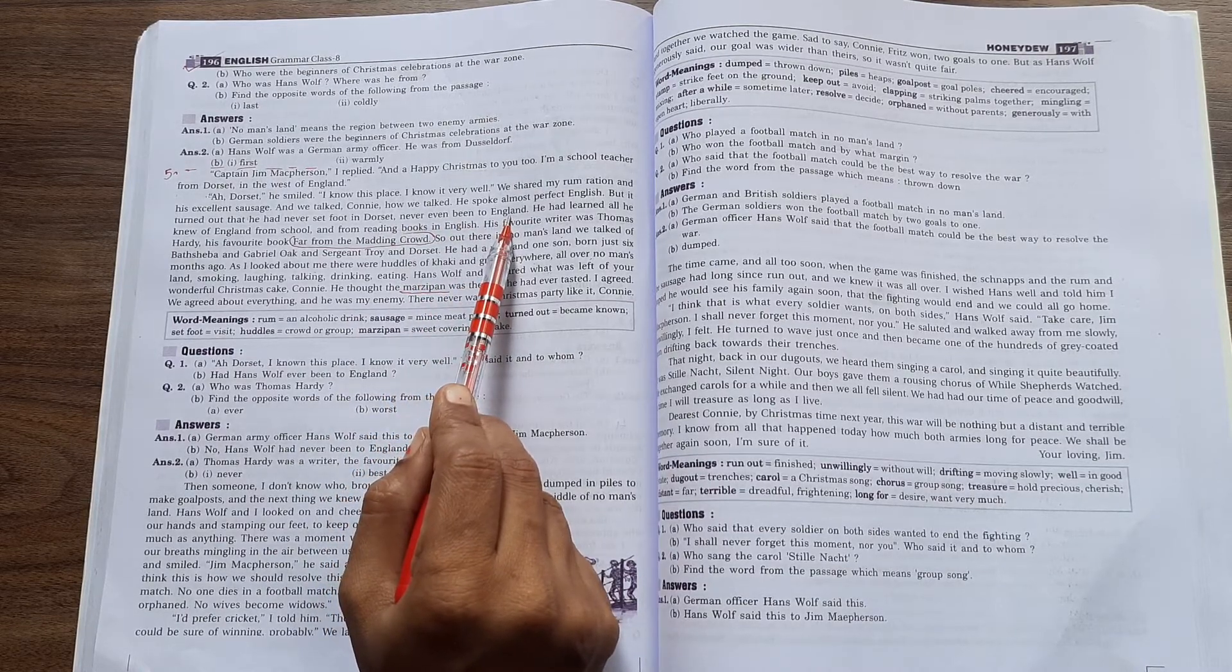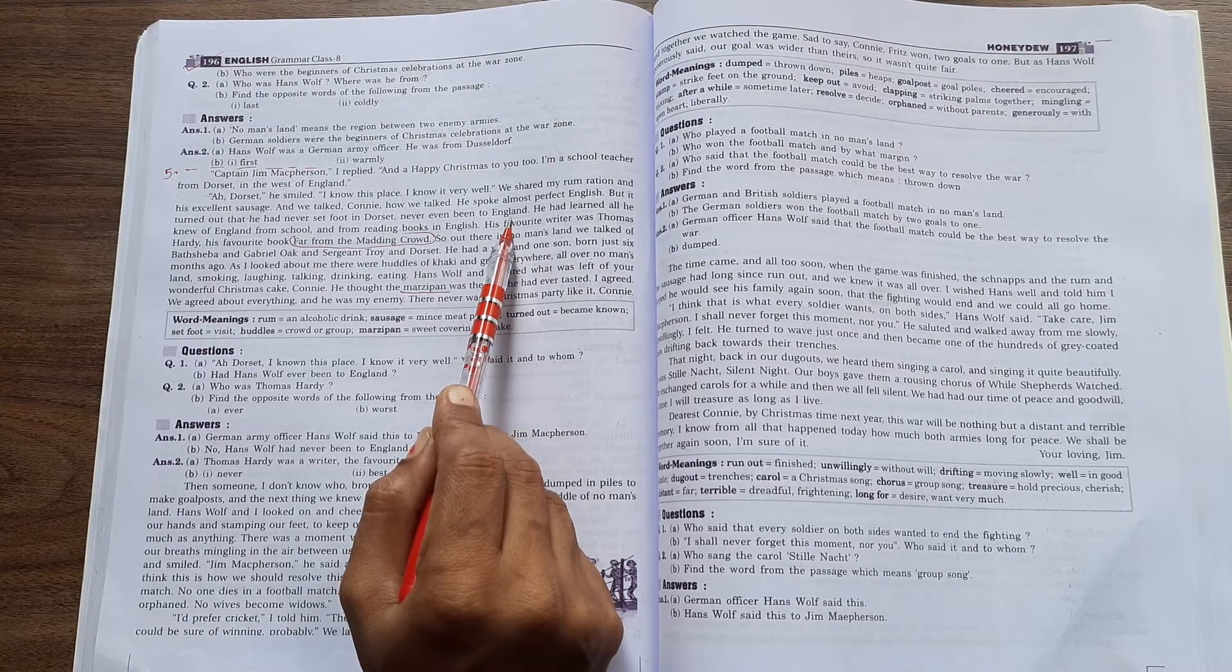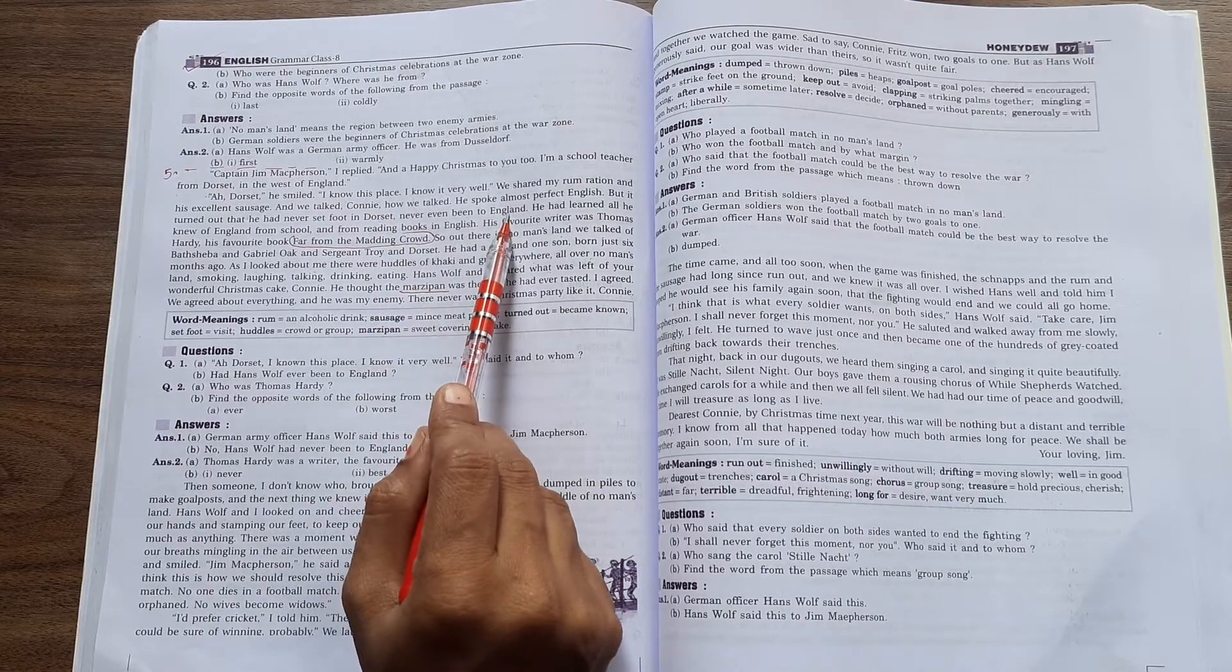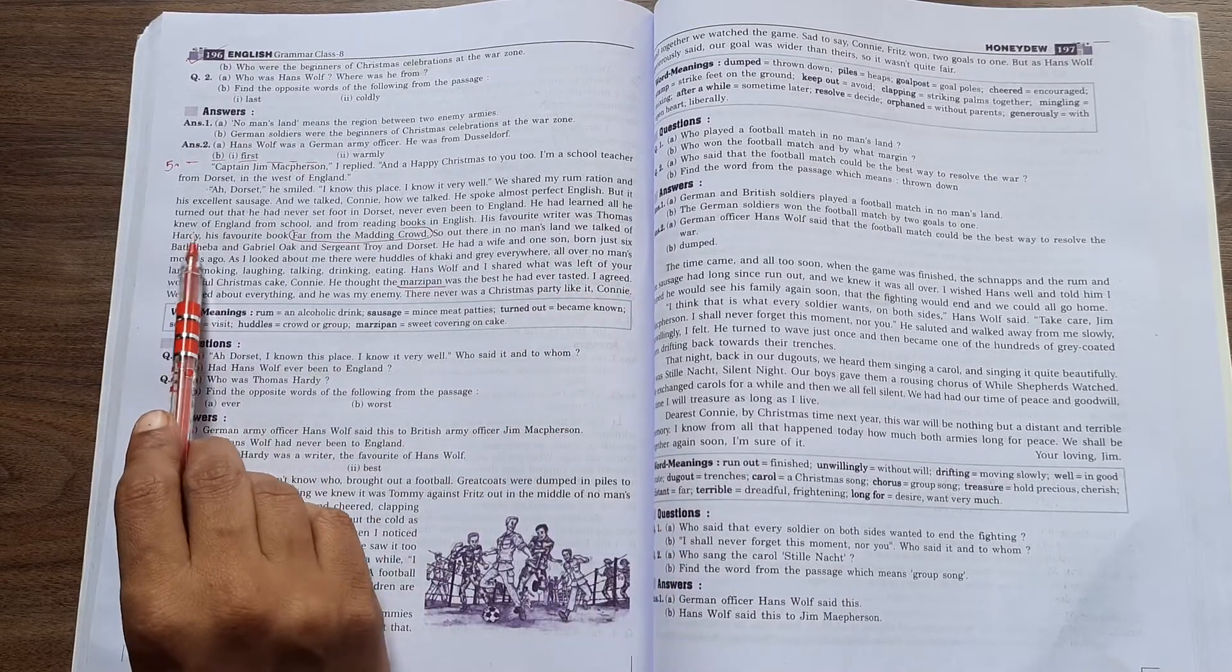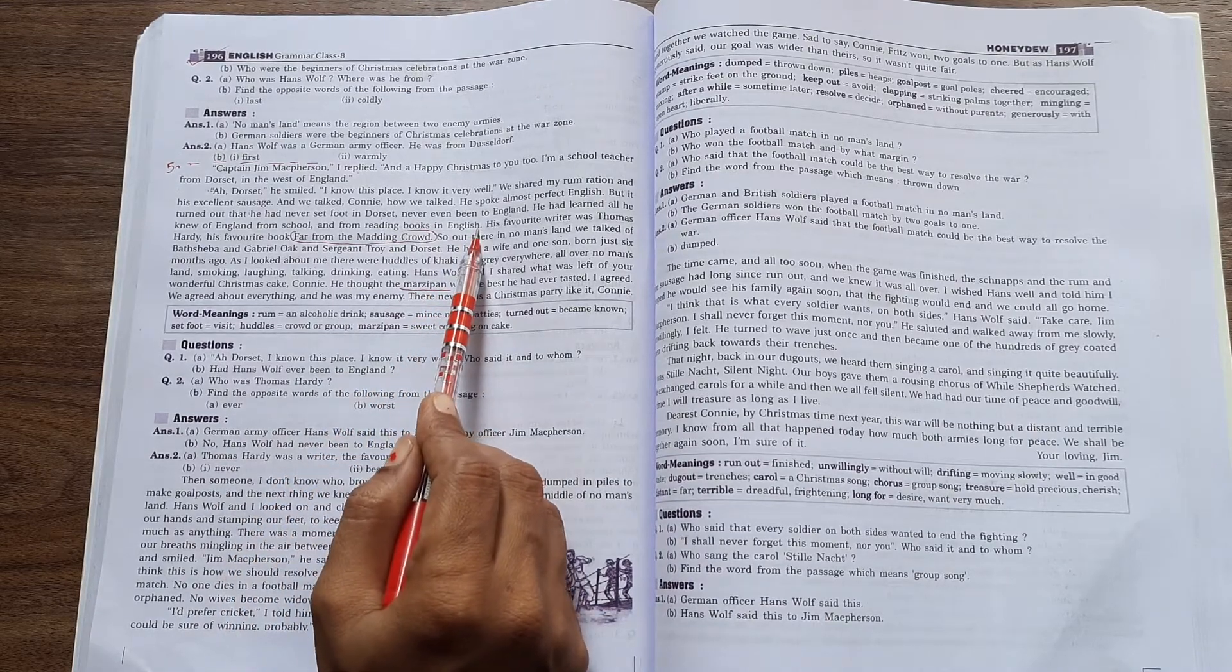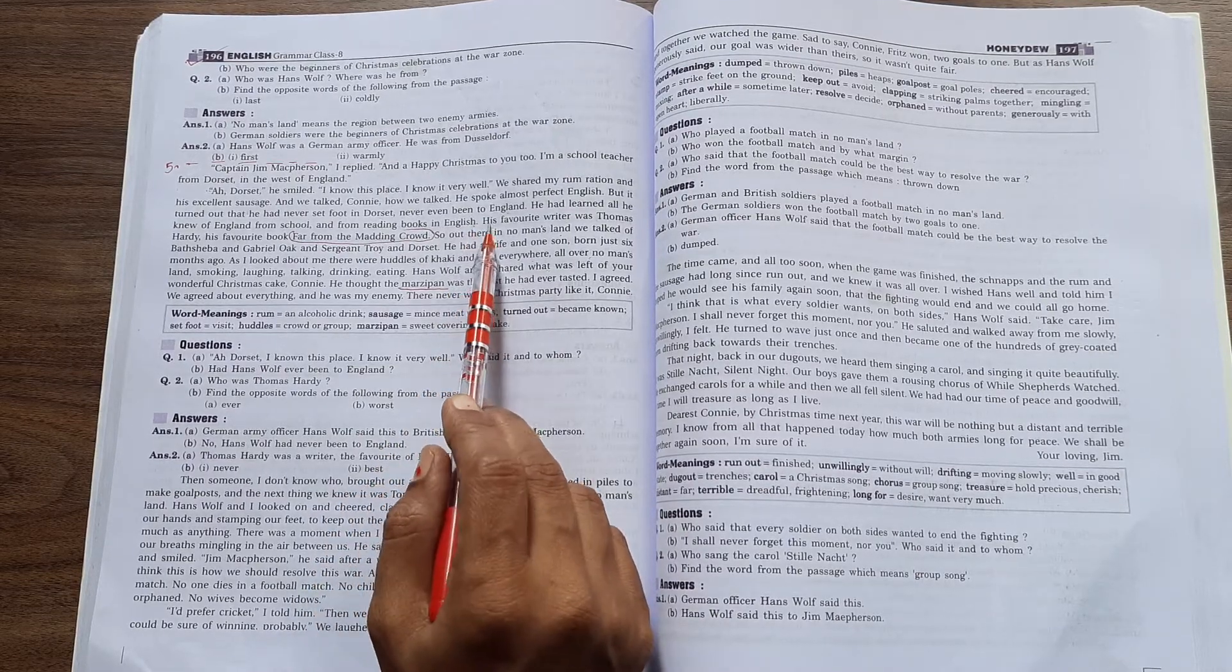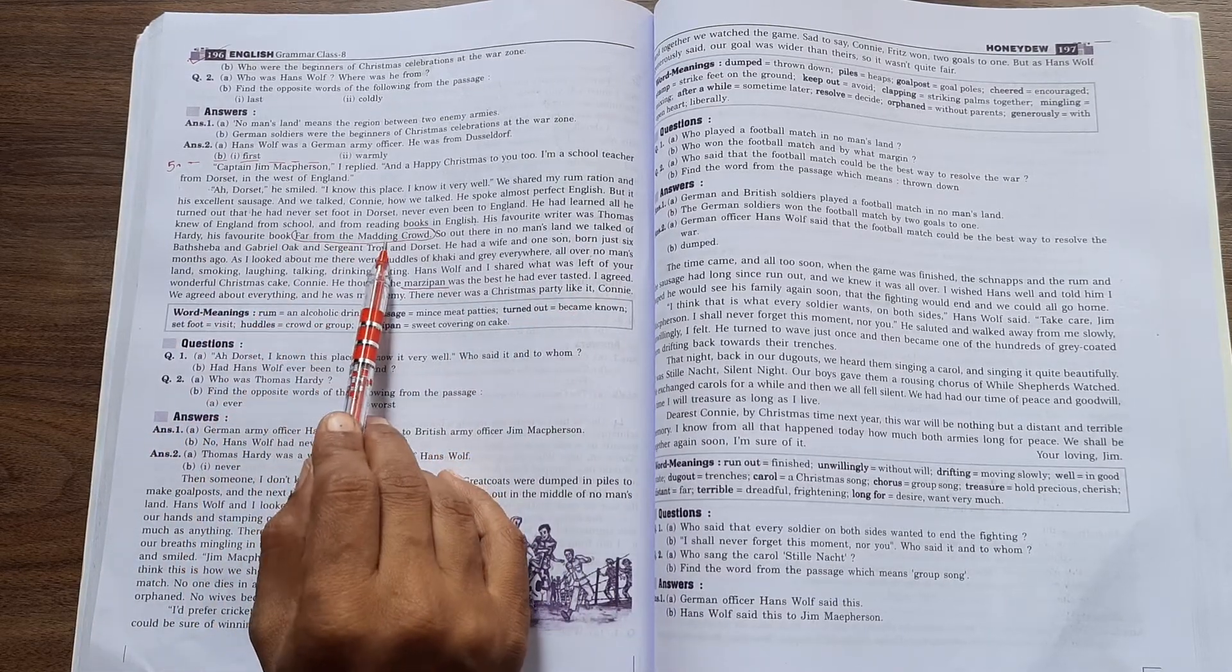He was speaking very nicely in perfect English, but the reality is he never went to Dorset or any other English city. But he had learned all he knew of England from school and from reading books in English. He had a lot of knowledge of English language and England, and he gained all this knowledge from books. His favorite writer was Thomas Hardy, his favorite book 'Far from the Madding Crowd.'